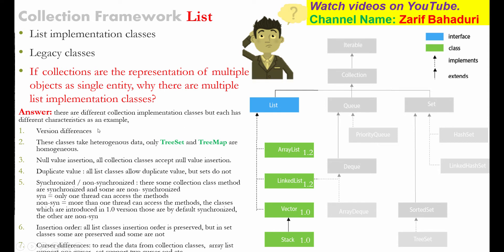There are differences between the classes. One key characteristic difference is version differences — for example, ArrayList vs Vector are from different Java versions. Another difference is that most collection classes accept heterogeneous data, meaning different data types. However, only TreeSet and TreeMap are homogeneous, meaning they accept only same-type data, like all integers or all strings.